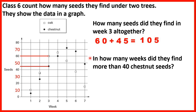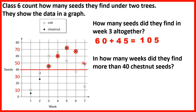In how many weeks did they find more than 40 chestnut seeds? We can draw a line across from 40 and look for the chestnut seed dots above that line. Counting the black dots above 40, we have 1, 2, 3, 4, 5 — so that's 5 weeks.